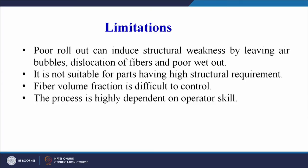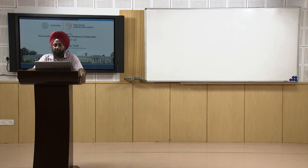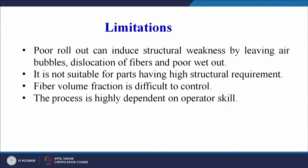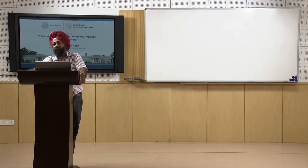The limitations: poor rollout can induce structural weakness by leaving air bubbles, fiber dislocations, and poor wet out. If process parameters are not controlled properly, we may get poor quality products with displaced fibers or inadequate polymer wetting. However, with optimal and judicious selection of operating variables, a very good quality product can be achieved, as demonstrated in our video.